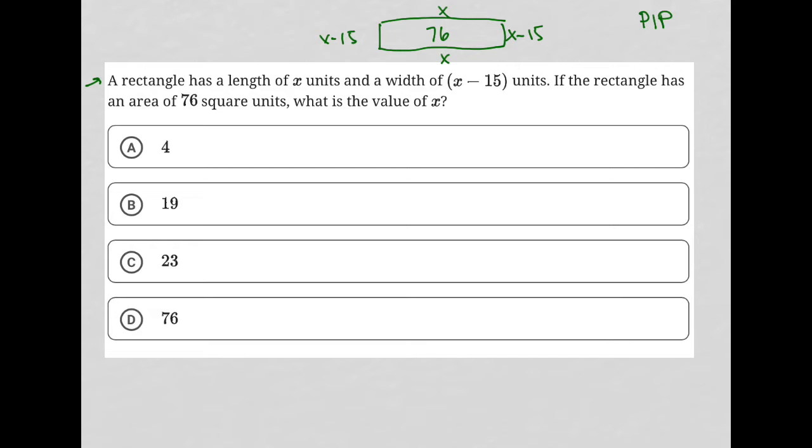Well, how do I find the area of a rectangle? It's just length times width, so it'd be x times x minus 15 equals 76. And I could do some math here. I'd have x squared minus 15x. Let's just say I subtract 76 from both sides, so I have minus 76 equals 0. I could do it that way.